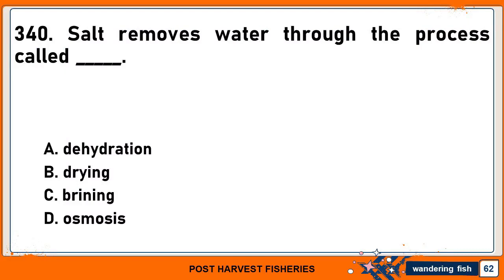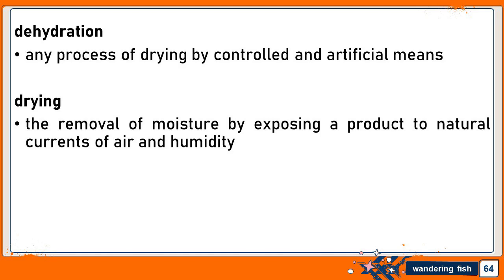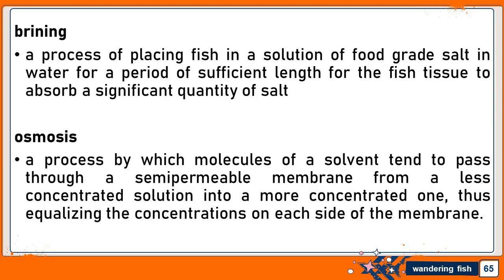The answer is D. Osmosis. Dehydration is any process of drying by controlled and artificial means. Drying is the removal of moisture by exposing a product to natural currents of air and humidity. Brining is a process of placing fish in a solution of food-grade salt in water for a period sufficient for the fish tissue to absorb a significant quantity of salt. Osmosis is a process by which molecules of a solvent tend to pass through a semi-permeable membrane from a less concentrated solution into a more concentrated one, thus equalizing the concentrations on each side of the membrane.